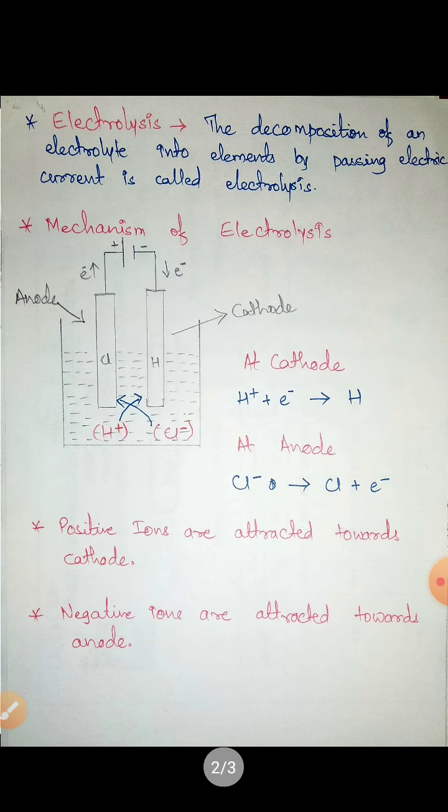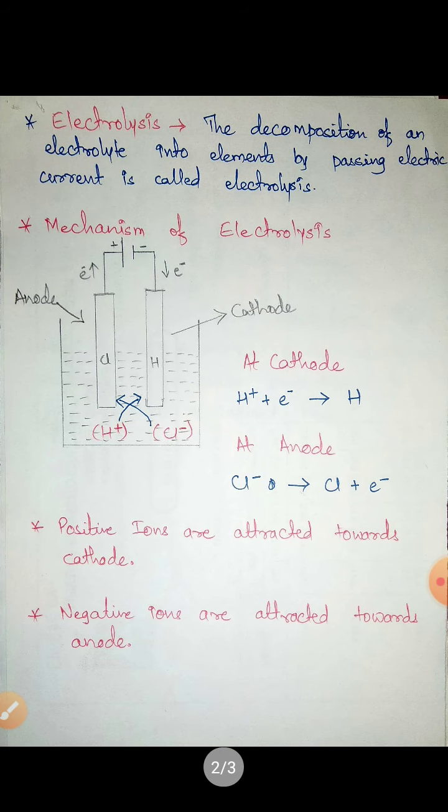Now we will see what is electrolysis. The decomposition of an electrolyte into elements by passing electric current is called electrolysis. The decomposition of an electrolyte into its elements takes place by passing electric current.